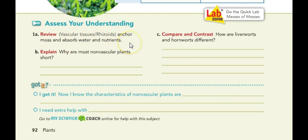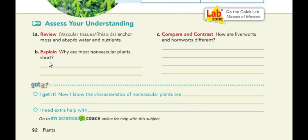Then go down to the assess your understanding section. Answer 1A — the options are vascular tissues or rhizoids, anchor, moss, and absorb water and nutrients. Circle the correct choice. You can pause this at any time to write down your answers. For question 1B — why are most nonvascular plants short? Remember, the text says that nonvascular plants do not have cell walls. Cell walls are a second layer of plant cells that make them stronger. Most nonvascular plants are short because they don't have that extra cell wall to make them more sturdy, so they can't grow as tall.